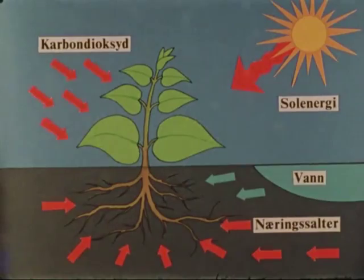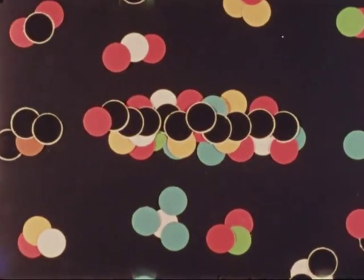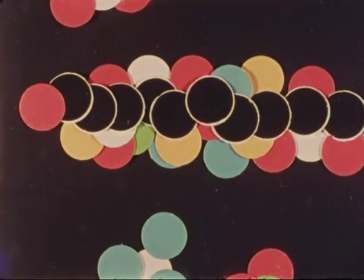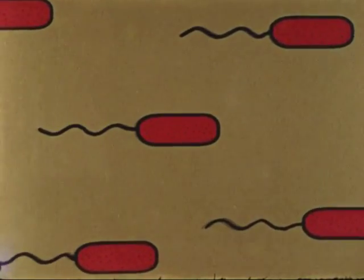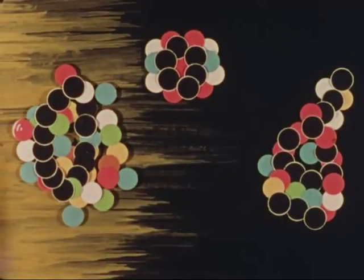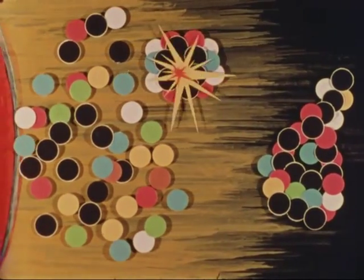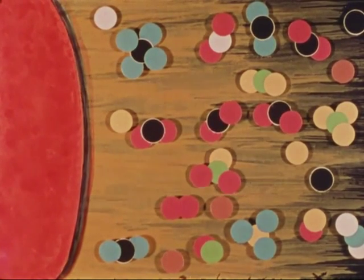Hvordan kan mikrobene klare sin nedbrytende virksomhet? De har jo hverken munn eller mage. Først må vi se hvordan organiske stoffer er bygget opp. I likhet med alle andre stoffer består de av molekyler som er satt sammen av atomer. De organiske materialene i planter og dyr er bygget opp av molekyler som er alt for store og kompliserte til at bakteriene kan bruke dem direkte. Men bakteriene kan lage verktøy — de har evnen til å skille ut enzymer. Enzymene er noen merkelige stoffer som kan sette i gang kjemiske reaksjoner som spalter de store molekylene til enklere deler. Det finnes mange forskjellige enzymer, og noen kan binde sammen atomer til molekyler som passer til hver enkelt type bakterier. På denne måten får bakteriene omgitt seg med næring, og så tar de til seg det de trenger.